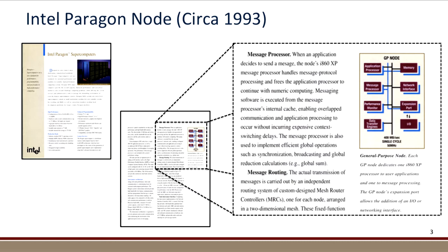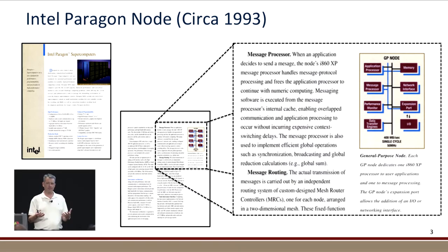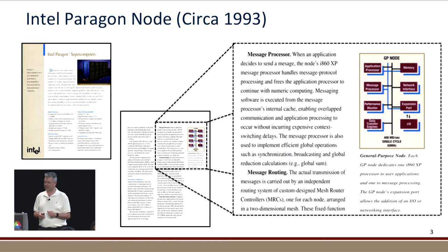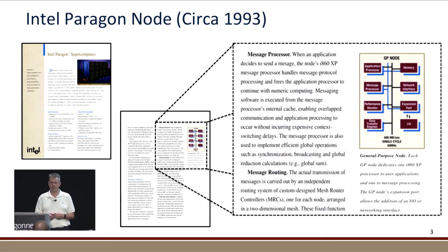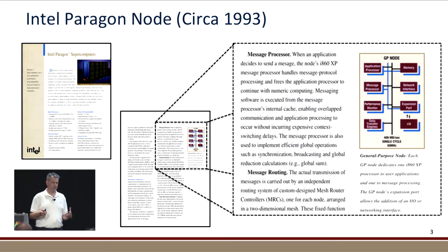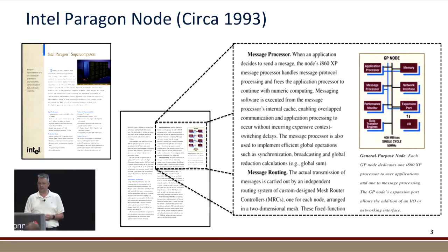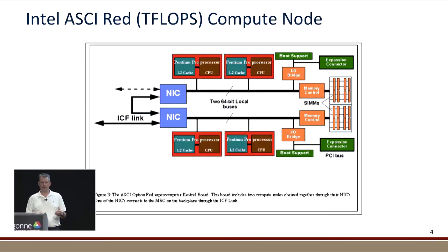This was an interesting emphasis of those early MPP machines: compute is as important as the network. You have to have network performance in order to get MPP machines to scale. When I started at Sandia, we had a large 1800-node Paragon. The group I joined was writing a compute node operating system to replace Intel's OS because of scalability and performance issues.